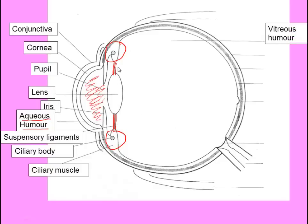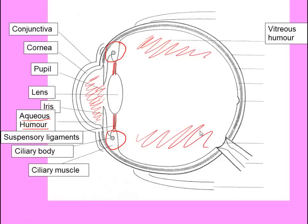Behind the lens and the suspensory ligaments is the next chamber — the vitreous humour. This is filled with a transparent jelly all the way through it. The sclera is the layer all the way around the outside of the eye — the whites of your eye — a tough protective coat which keeps your eye protected from damage.